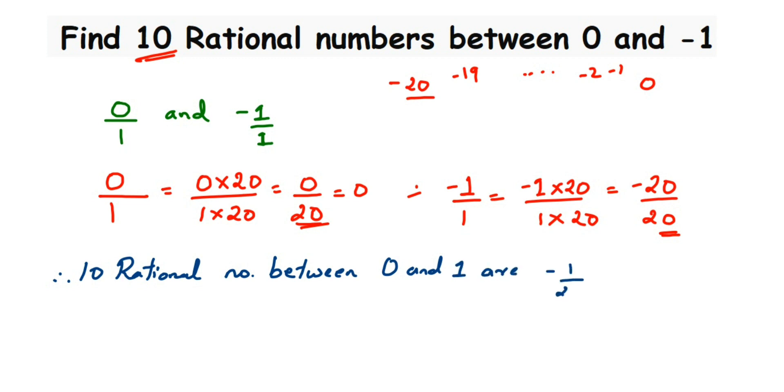You can multiply with any number. I've taken 20, but you can choose 100 or 30. I took 20 because it's easy to multiply and the gap is sufficient to get 10 rational numbers. I started with -1/20, -2/20, -3/20.